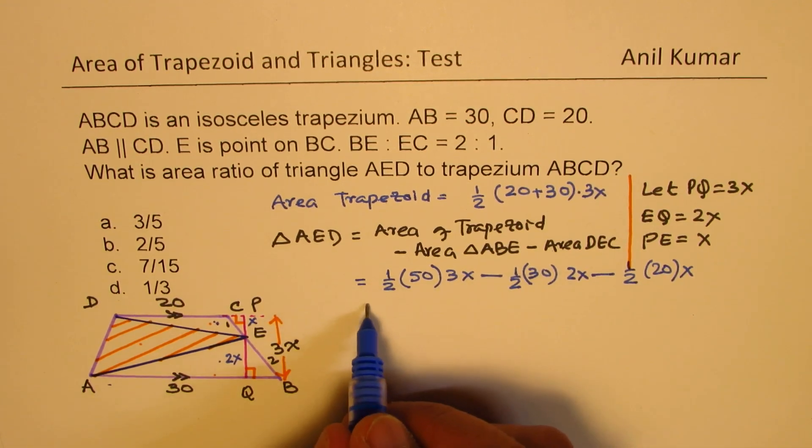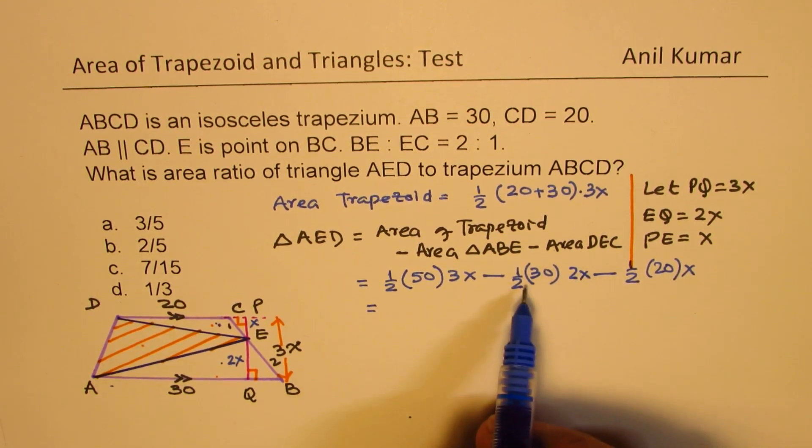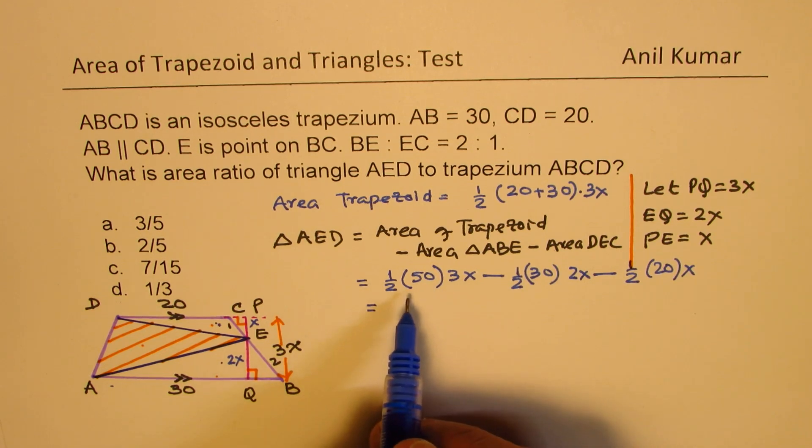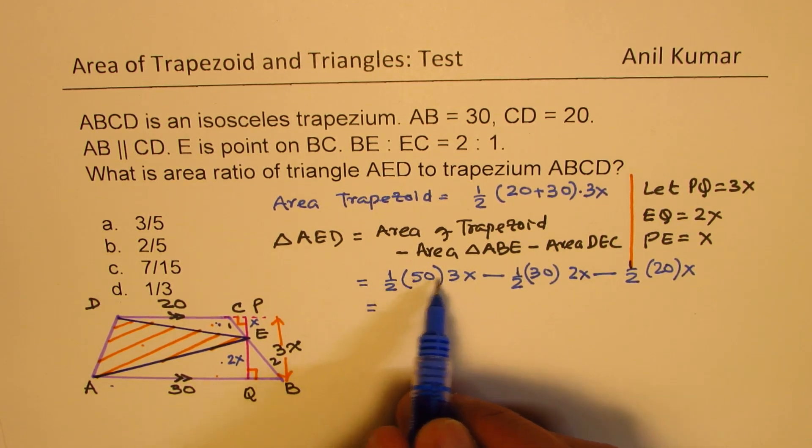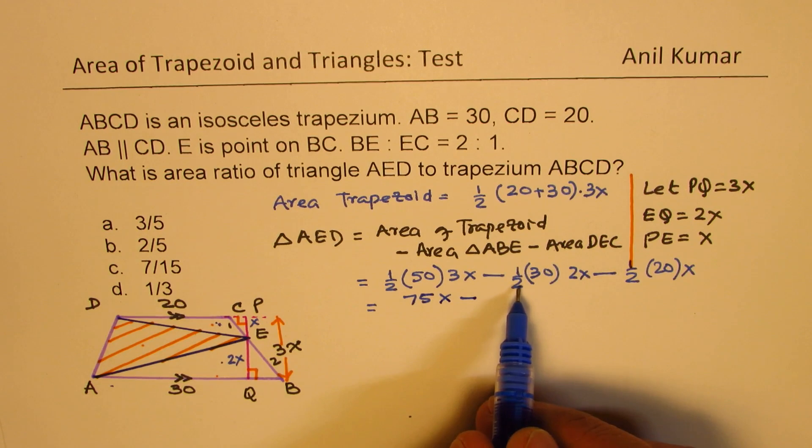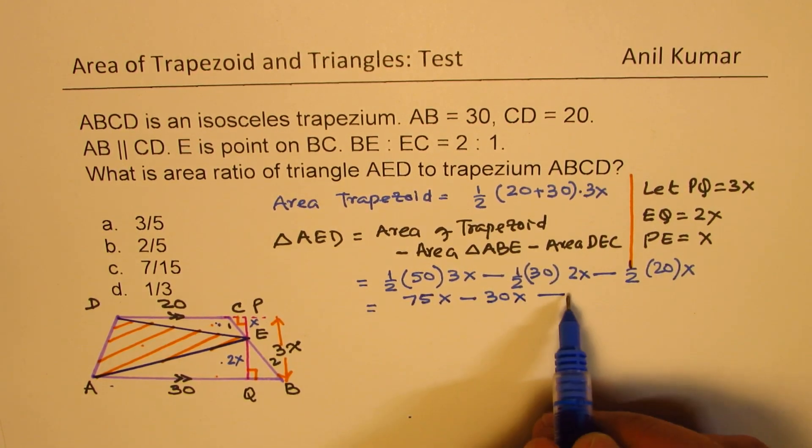Which you could simplify. So we have X is common factor. So X is common. And then we can simplify this term. So what we get here is 25 times 3 is 75. So we have 75X minus this is 30X minus this is 10X.